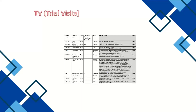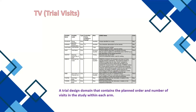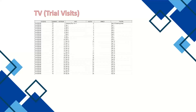For Trial VISITS, we need to figure out all unique visits and enter that information to create the dataset. These are the variables as per the implementation guide. The Trial Visit domain contains the planned order and number of visits within each arm. For example, if two treatments are given — one weekly and one monthly — we need to enter how many visits exist per treatment, assigning specific visits only to the applicable treatment.